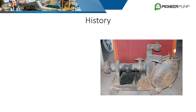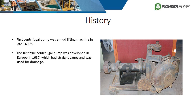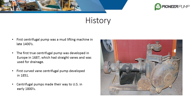To begin, we will cover a brief history of the centrifugal pump. As a machine, the centrifugal pump has remained relatively consistent in design for over 300 years. The first pump was likely built in the late 1400s and was used as a mud lifting machine. The first true centrifugal pump with straight vanes was developed in Europe in 1687 for drainage. Eventually, curved vanes, which are more efficient, were developed and employed by engineers around 1851. Centrifugal pumps became prominent in the U.S. in the early 1800s and we have seen more widespread use in the last 75 years.